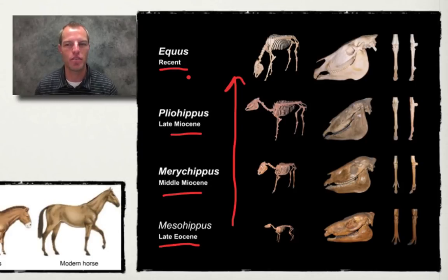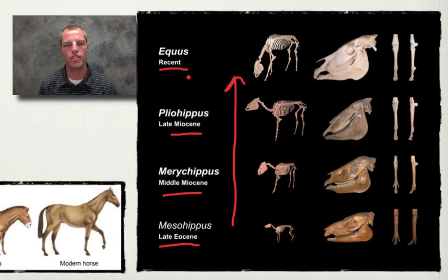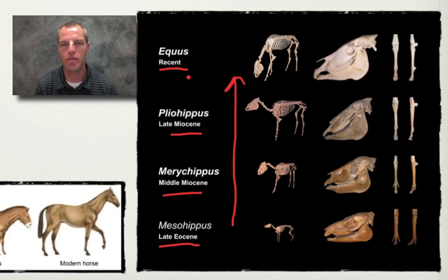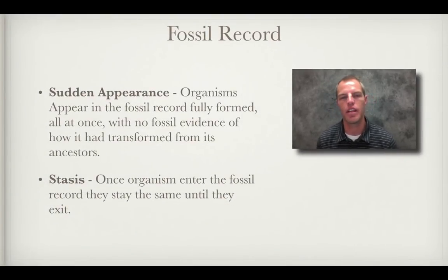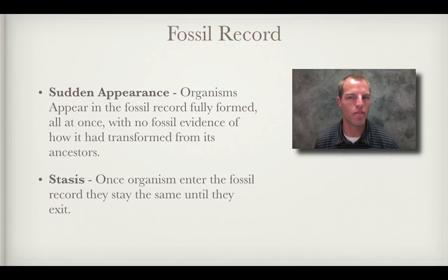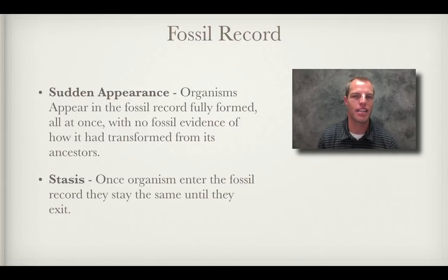But again, the problem is we don't know how the horse became a horse in the first place — all those fossils are just horses. Where the fossil record has a tough time showing this idea that we all evolved from a common ancestor is showing us where those transitional forms are. Whatever a horse was before it became a horse — how did it transition? That's what we don't find. There's a lot of evidence of what we call sudden appearance, meaning organisms appear in the fossil record fully formed all at once with no fossil evidence of how they transformed from their ancestors.